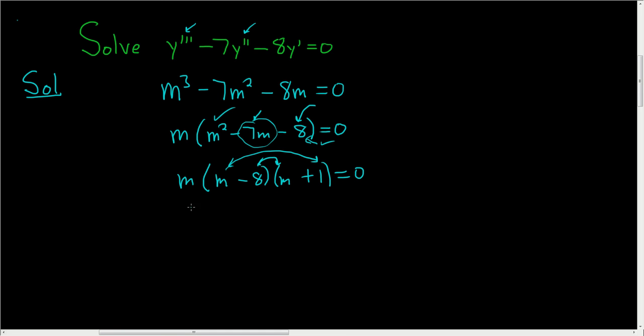So we end up with three roots: m equals 0, m equals 8, and m equals negative 1.